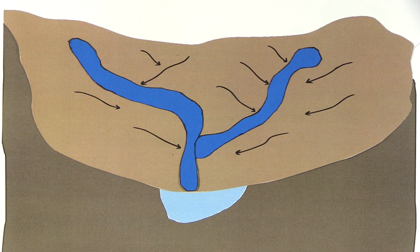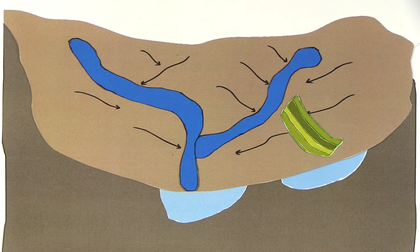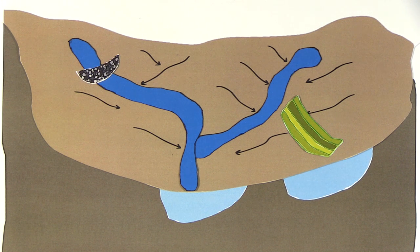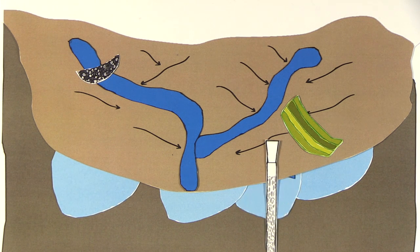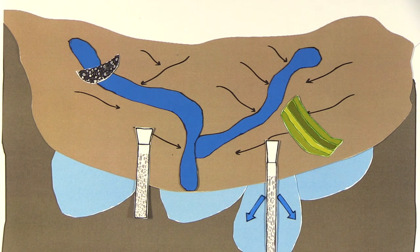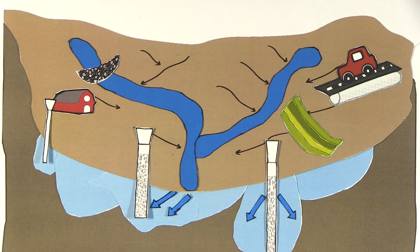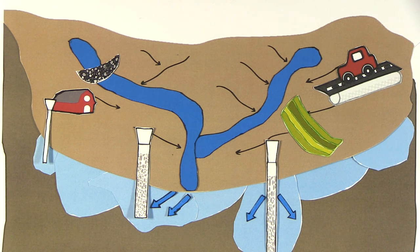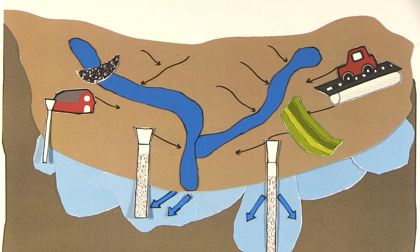The managed aquifer recharge methods can be classified into surface systems, in-channel modifications, deep systems, filtration systems, and rainfall and sustainable urban drainage systems. The method or combination of methods used to recharge an aquifer depends on the local conditions.